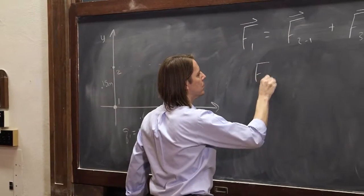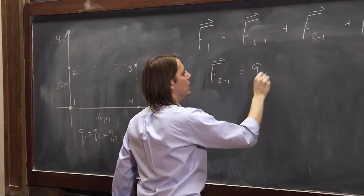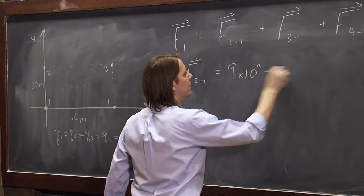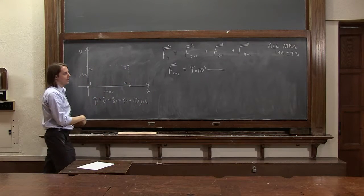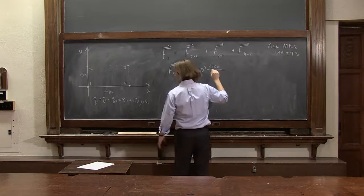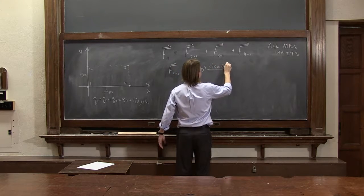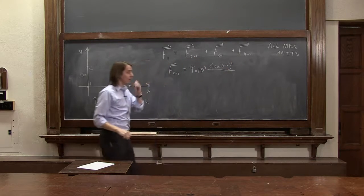So F2,1 equals KE 9 times 10 to the 9 times the charge. And it's actually the same charge, so I'm going to write it squared. So it equals 10 times 10 to the minus 6 coulombs squared. But I'm not writing coulombs.